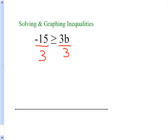So negative 15 divided by 3 is negative 5, and that's going to be greater than or equal to, I just dropped down my sign in this case, 3b divided by 3 is just 1b or b. So negative 5 is greater than or equal to b.